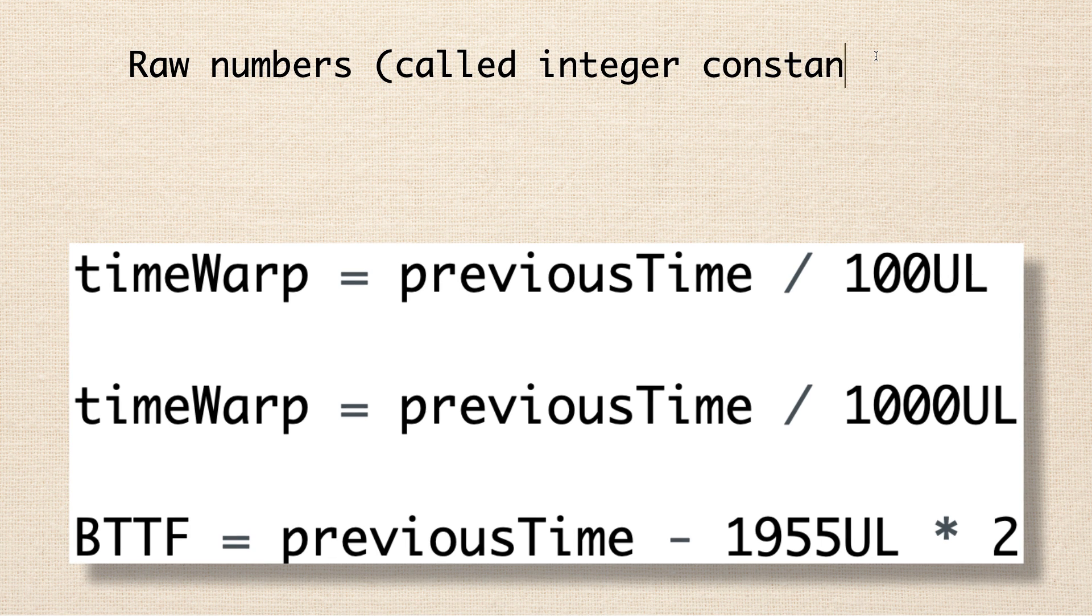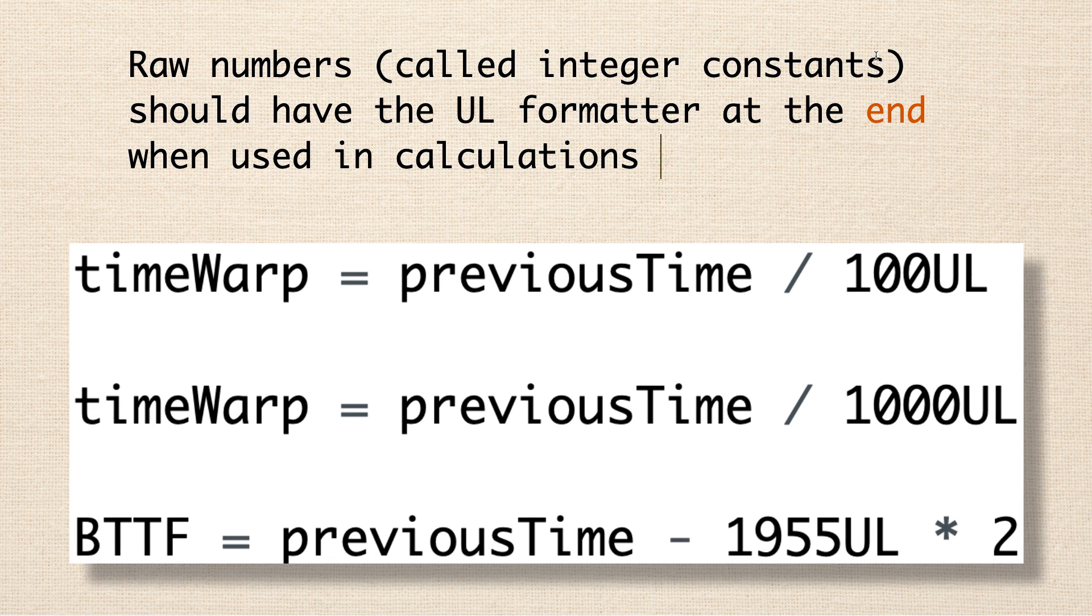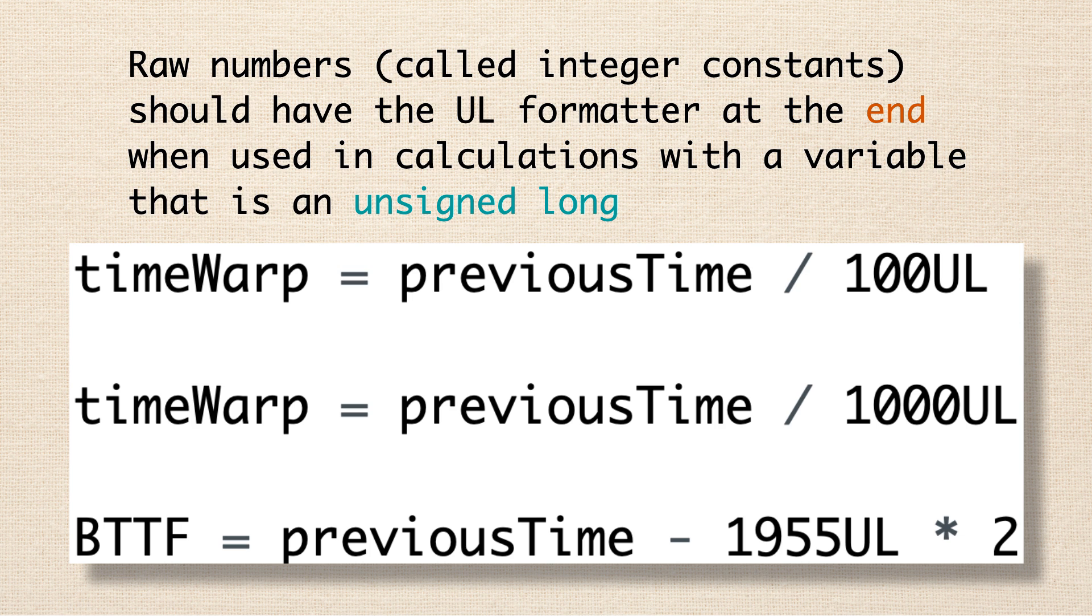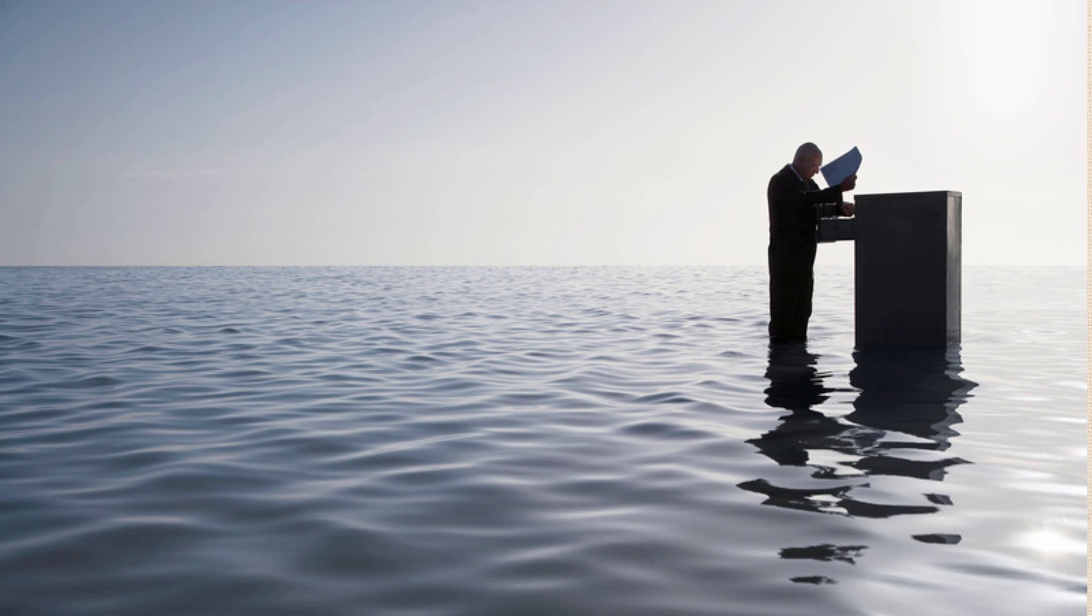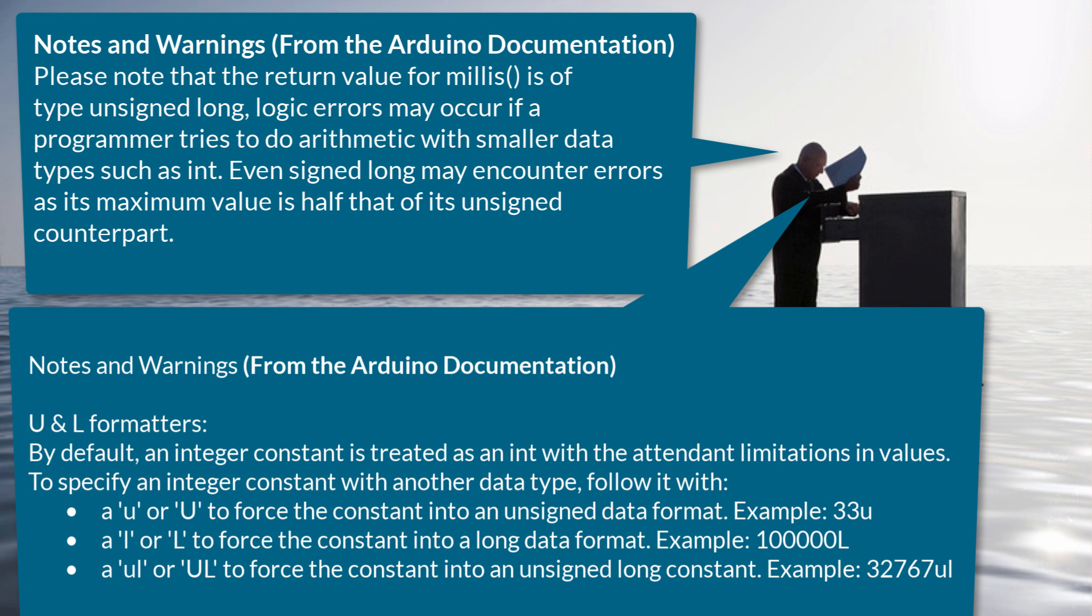The second thing is if you're going to be using any raw numbers to do a calculation on an unsigned variable, make sure that at least one of the numbers in that calculation has a UL formatter at the end of it. For example, if you're dividing previous time, which is an unsigned variable, by 100 or maybe by a thousand, then make sure that the numbers are written as 100UL or 1000UL. Raw numbers like these are called integer constants. And if you don't put that UL formatter on the end, then the calculation can create some really unexpected results. I won't get into the details about the strange results that can happen and necessarily why it happens, but basically it has to do with when those numbers roll over after they get to their maximum value. And that UL formatter at the end of that raw number specifies that that number should be treated as an unsigned long.